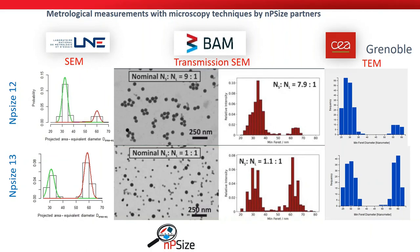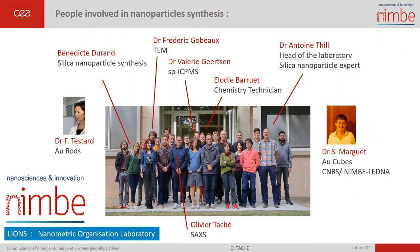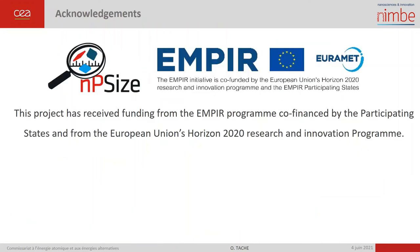This slide presents a quick comparison of the results from the different microscopy techniques used by the NP-SIZE project partners. The results are very close to the SAXS results and show consistent size and ratio distributions. Our work in progress is to compare the data between all the institutes. I would like to thank all the people at CEA Paris-Saclay involved in the nanoparticle synthesis and analysis. This work has received support from the European Metrology Programme for Innovation and Research.